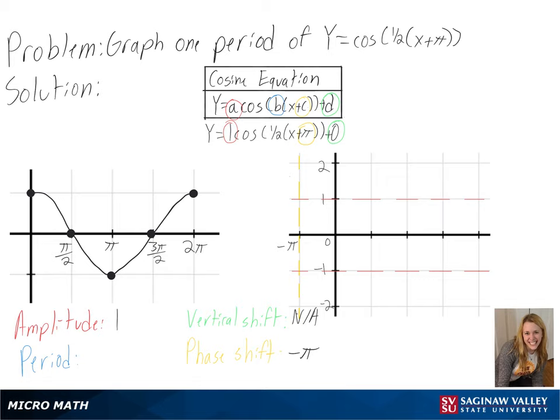Then we can solve for our period, or 2 pi over b. We can see here our b is a half, so we will get 4 pi as our period.